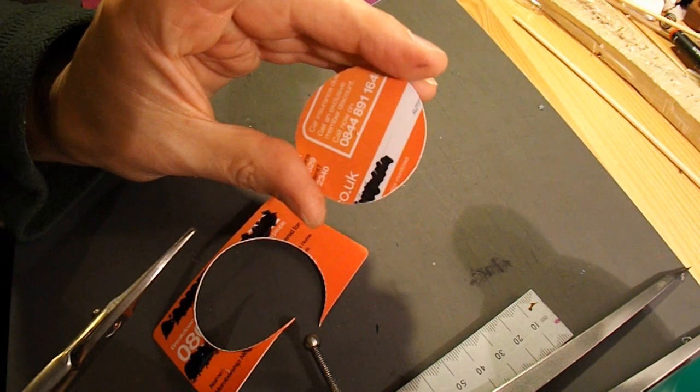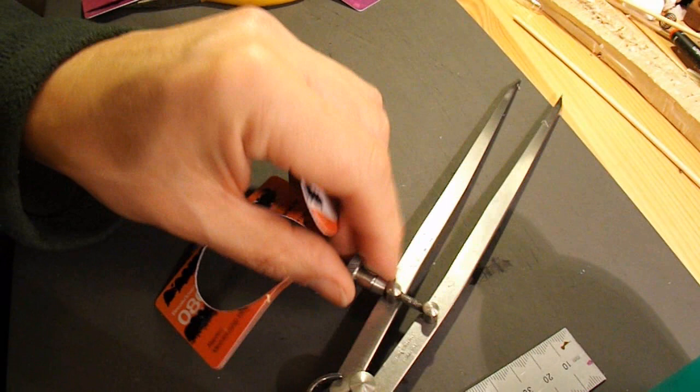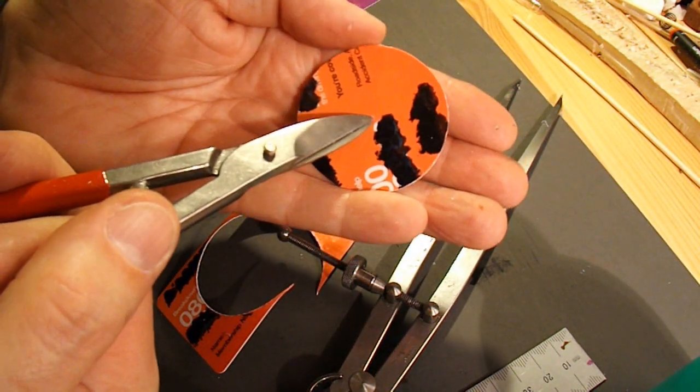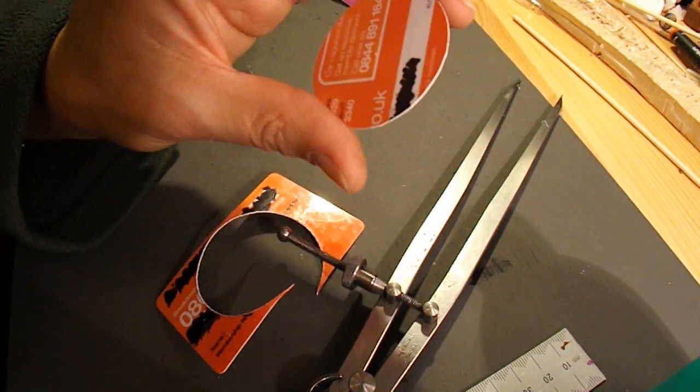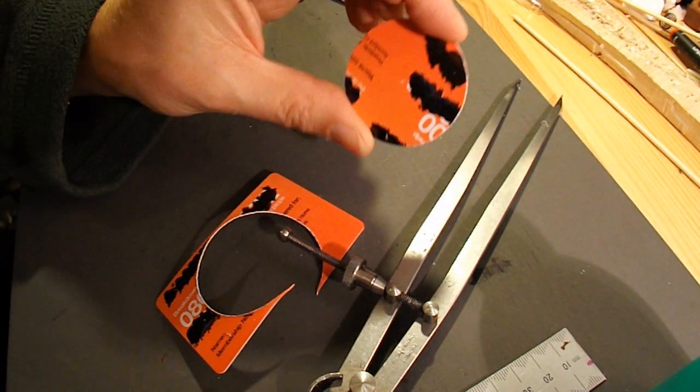There we are. The handy thing about using these to mark out the circles is you've got the centre marked for you. Which is half the trouble when you draw around a tin or something. You don't know exactly where the centre is.